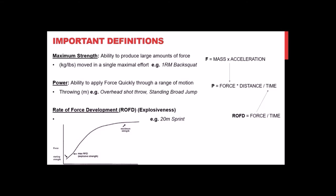Looking at the equations on screen: power equals force times distance divided by time. Power is the quality we're always trying to increase in strength training for track and field. The force component relates back to maximal strength — force equals mass times acceleration — so if we can get stronger, that can influence how much power we produce.